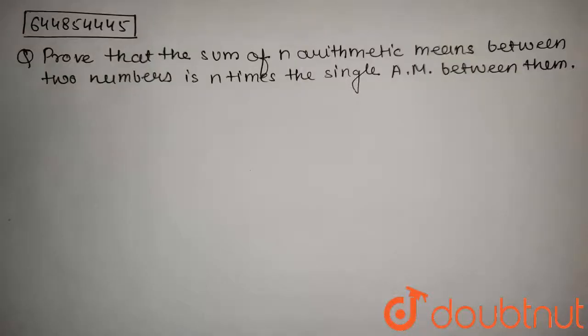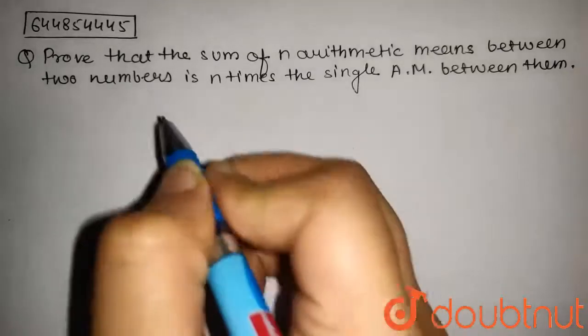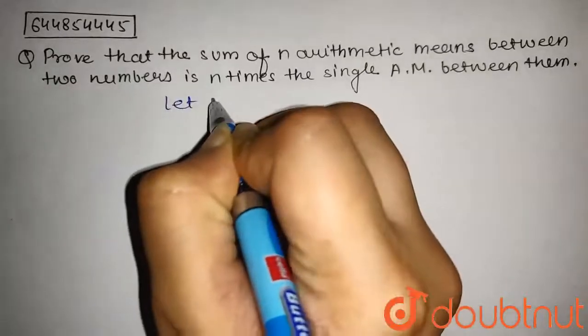...sum of n arithmetic means between two numbers is n times the single arithmetic mean between them. So let the two numbers...